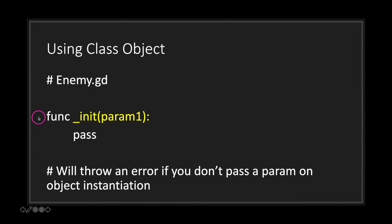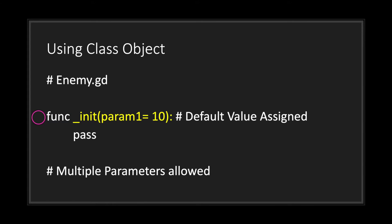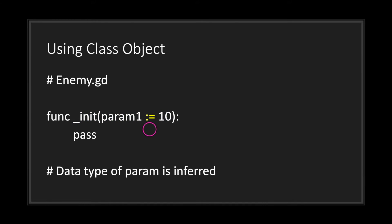We have a function _init and we take in a parameter — you don't have to, but then there's little reason to use the _init function. Keep in mind if you declare a parameter inside your _init method but create an instance object without passing a parameter, you will throw an error. To avoid this, assign a default value using the equal sign followed by the literal value. You can also infer data type using the colon-equal symbol, which both assigns a default value and declares an inferred data type.